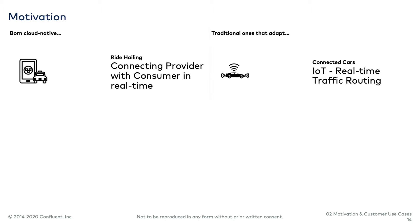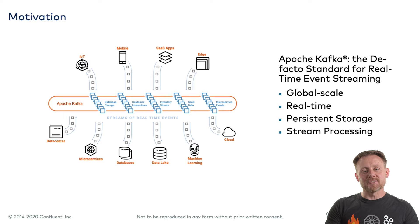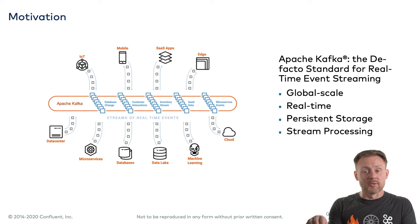And lest I bury the lead: it is Apache Kafka that has become the de facto standard for real-time event streaming. It provides all these things. At its foundation, it's a distributed log, so we can gather events from the outside world and store them in that log. They're stored in a scalable, replicated, and fault-tolerant way.